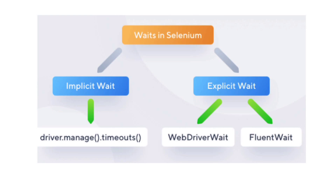Sometimes, suppose you are searching for a button you have to click, but that button is not enabled at that time. Then Selenium will fail — it will say 'no such element present.' But we know, as the coder, developer, or tester, that this particular element may appear after a few seconds. As a human being we know, but the system won't.